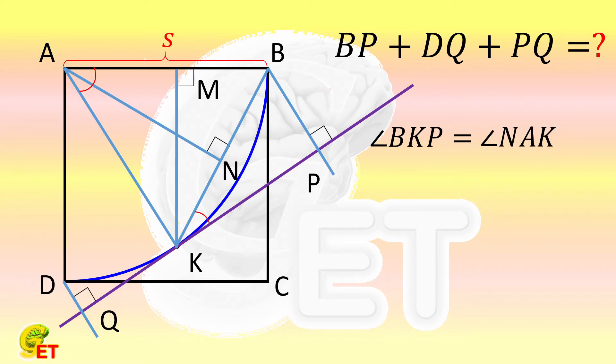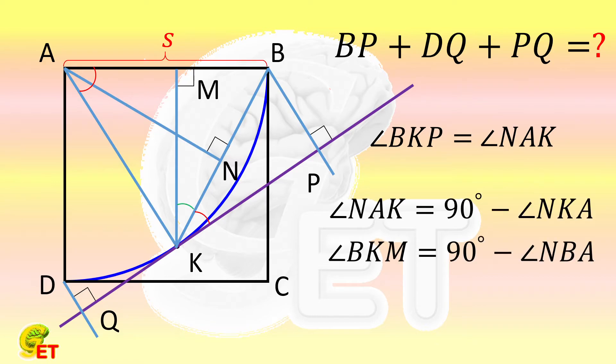The angles NAK and BKM are complementary to the angles NKA and NBA, respectively. Again, since triangle ABK is an isosceles triangle, angle NKA and angle NBA are equal. So angle BKP is equal to angle BKM.